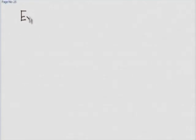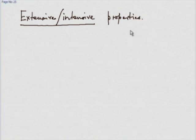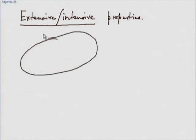The other way of looking at properties is as extensive or intensive properties. For this, we look at a system like this. Let us take a system — I will show it like this, a big bubble — and then consider it to be partitioned into two systems.